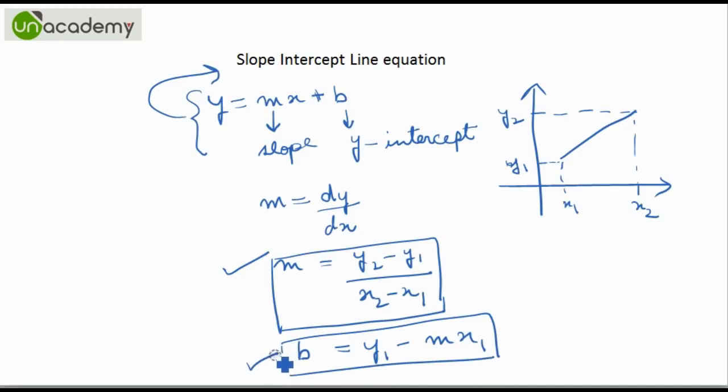The y-intercept will be y1 minus m times x1. So we have the slope and the y-intercept. Let us now begin talking about how the DDA works.